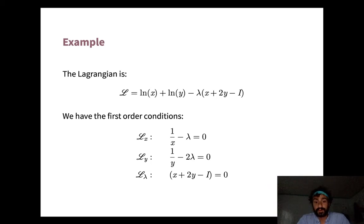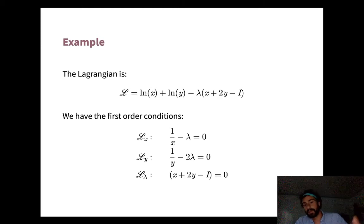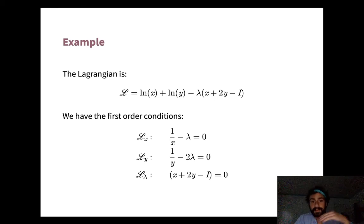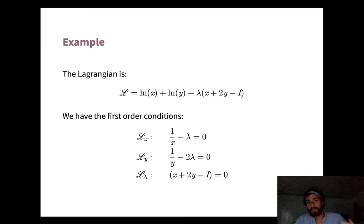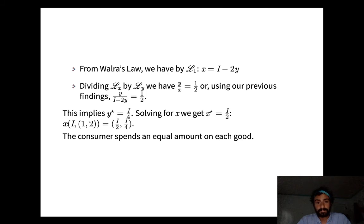Why does the budget constraint hold with equality rather than inequality? That's from Walras's Law. The function log(x) + log(y) is strictly monotone — more x or more y strictly increases utility — so the consumer spends all income. Therefore we don't need to worry about x + 2y being strictly less than I; at the optimum it exactly equals I, and we can use an equality constraint.